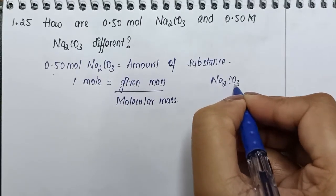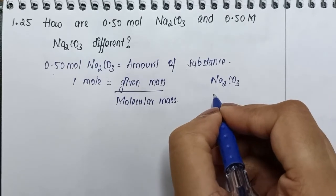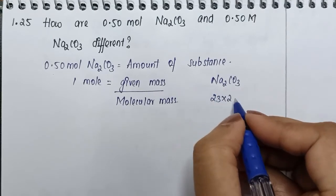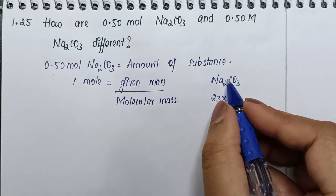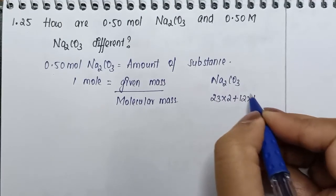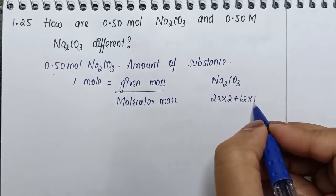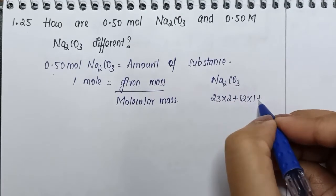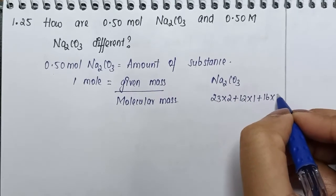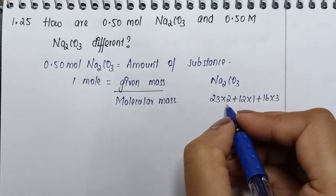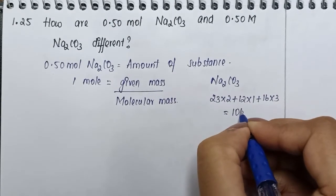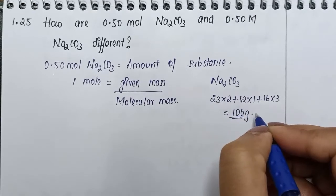If I'm trying to find the molecular mass of sodium carbonate, I will have 23 times 2 (atomic number of sodium times 2 because I have 2 atoms of sodium), plus carbon 12 times 1 (atomic mass of carbon, 1 atom), plus 16 (atomic mass of oxygen) times 3 (total 3 atoms). When I calculate, I'll get 106 grams as molecular mass for sodium carbonate.